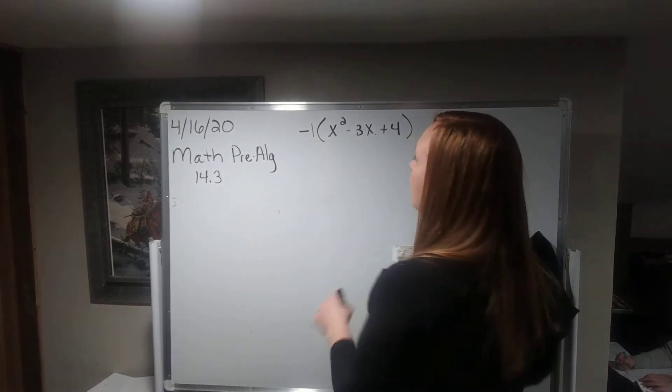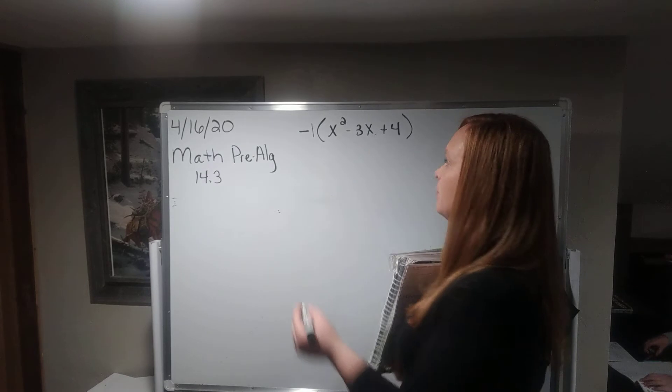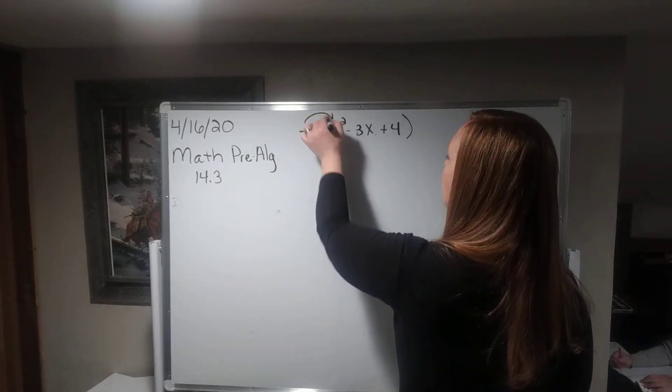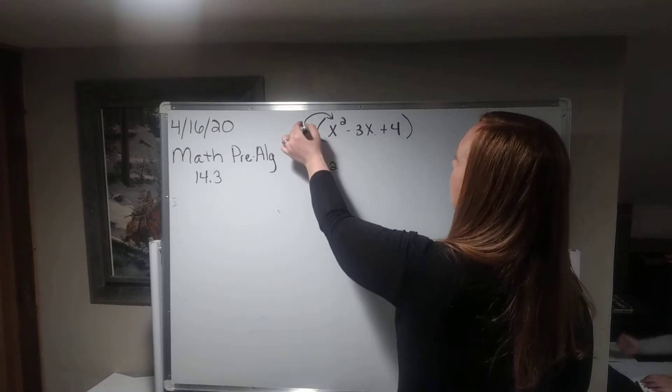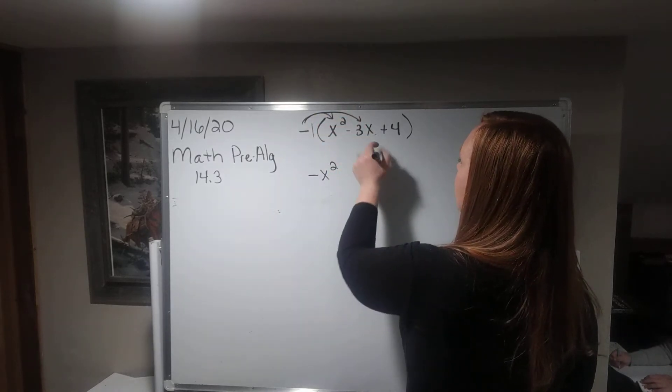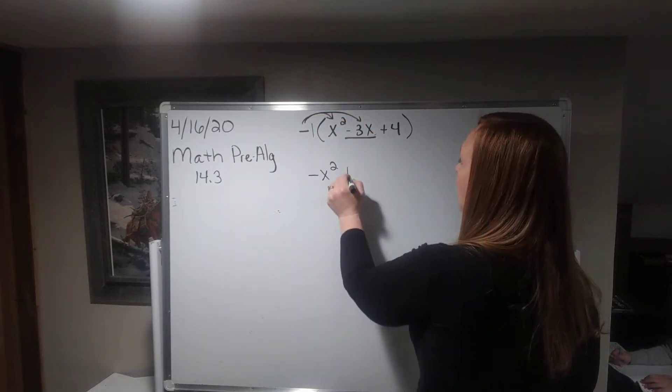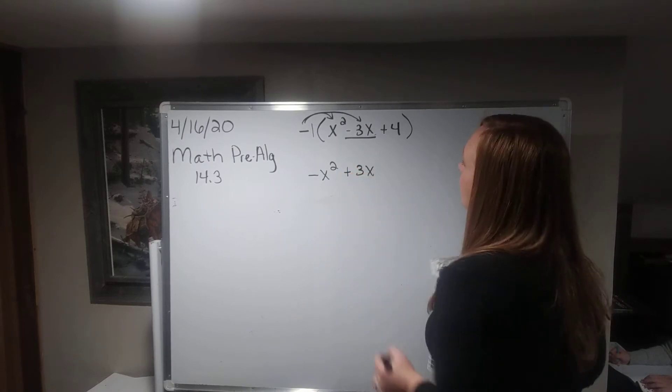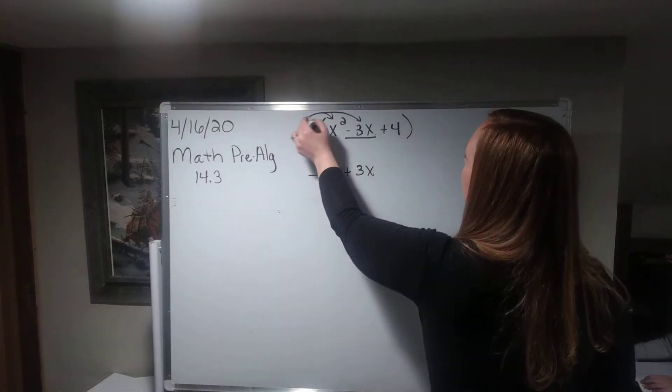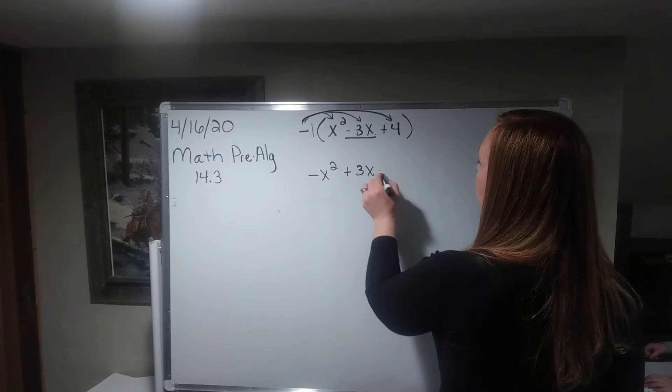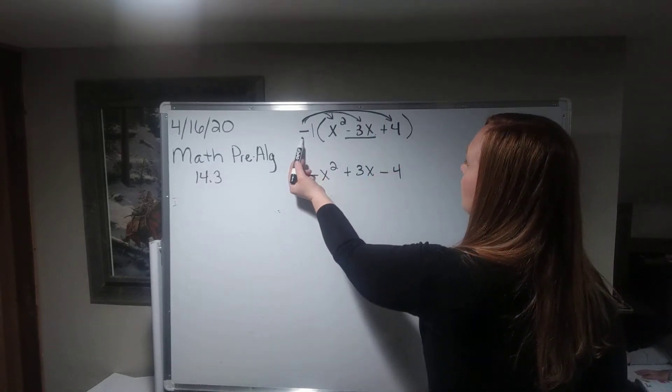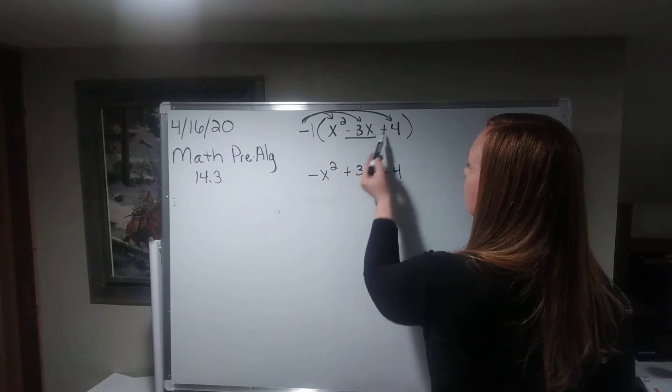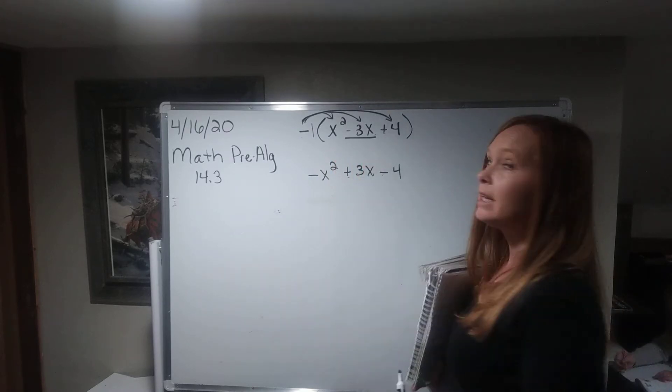Okay, well let's just go ahead and put a 1 here, and let's distribute that in. So negative 1 times x squared is negative x squared. Negative 1 times negative 3x would be positive 3x, and negative times 4 would be negative 4.